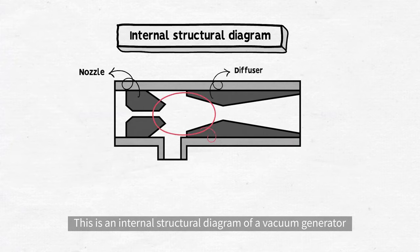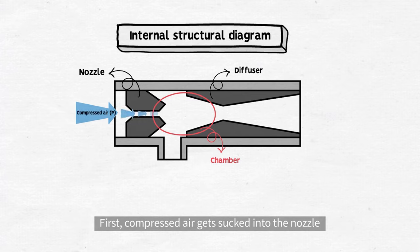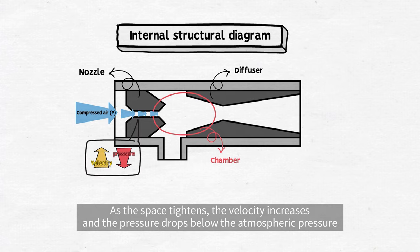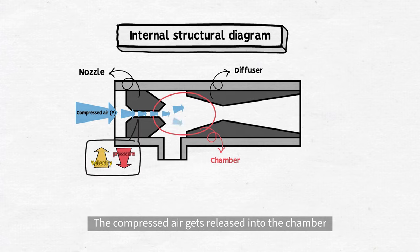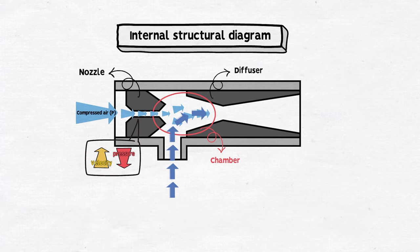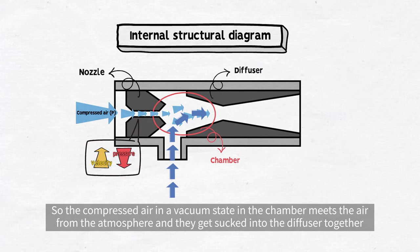This is an internal structural diagram of a vacuum generator. First, compressed air gets sucked into the nozzle. As the space tightens, the velocity increases and the pressure drops below the atmospheric pressure. The compressed air gets released into the chamber. Because air flows from high pressure to low pressure, the air in the atmosphere gets sucked into the vacuum generator. So the compressed air in a vacuum state in the chamber meets the air from the atmosphere and they get sucked into the diffuser together.